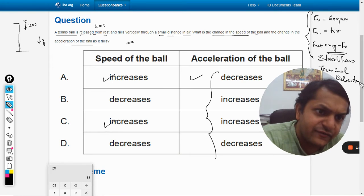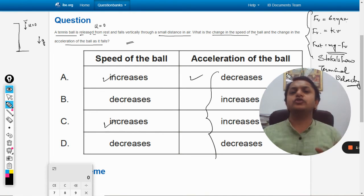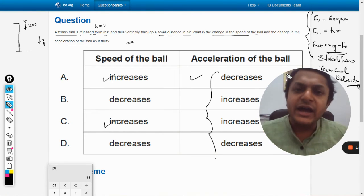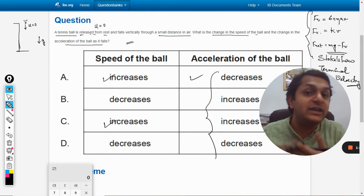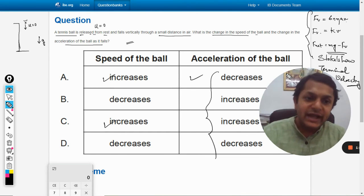So the curious students can further search for Stokes law and terminal velocity, and the terminal velocity is the velocity when the f net becomes zero, effectively that is the final velocity that would be gained by the ball.